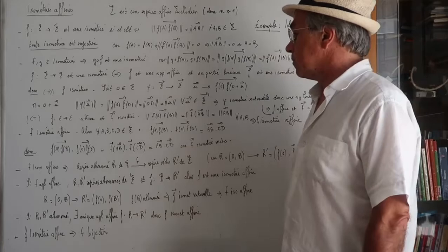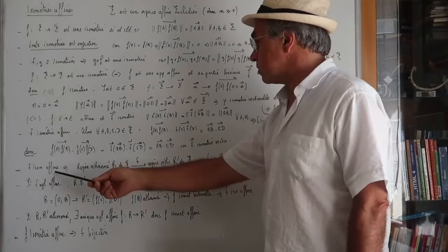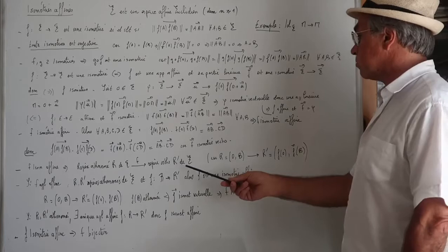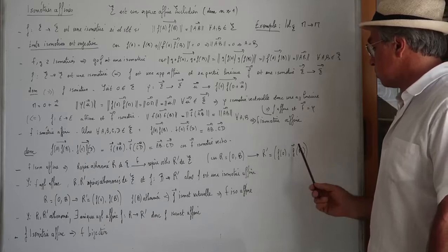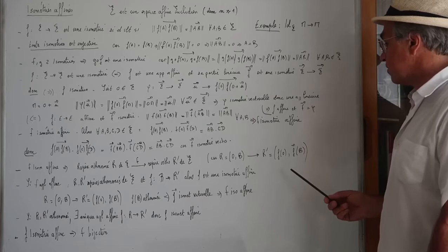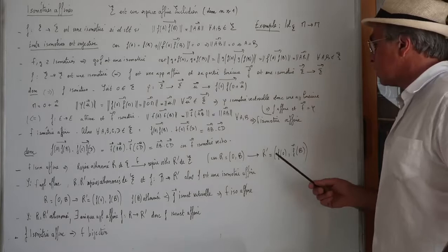Si F est une isométrie affine, alors elle transforme un repère orthonormé R de E en un repère orthonormé R' de E. Le repère R est constitué d'une origine et d'une base ; la base est envoyée en R', l'image de O et l'image de la base par la partie linéaire. Comme c'est une isométrie affine, l'image par la partie linéaire de la base est une base orthonormée, donc on obtient un repère orthonormé.